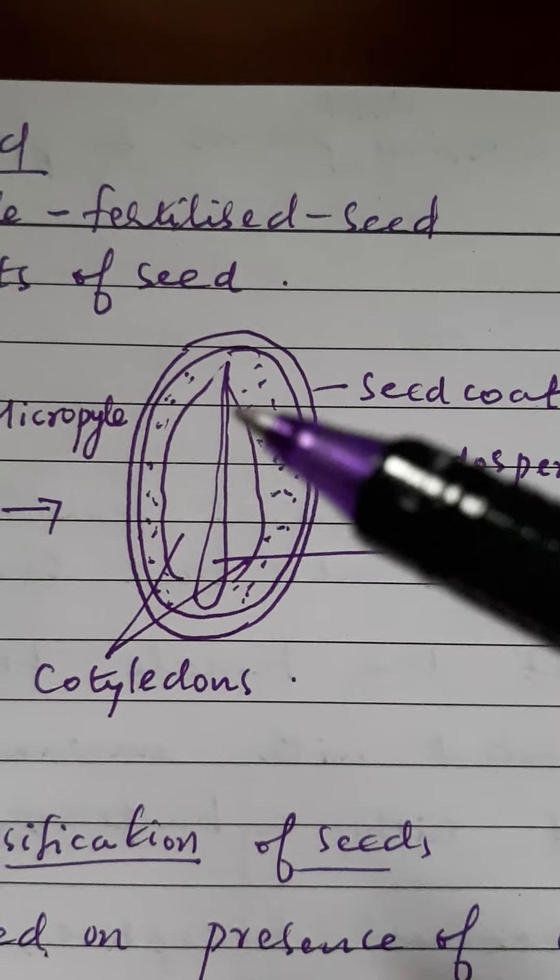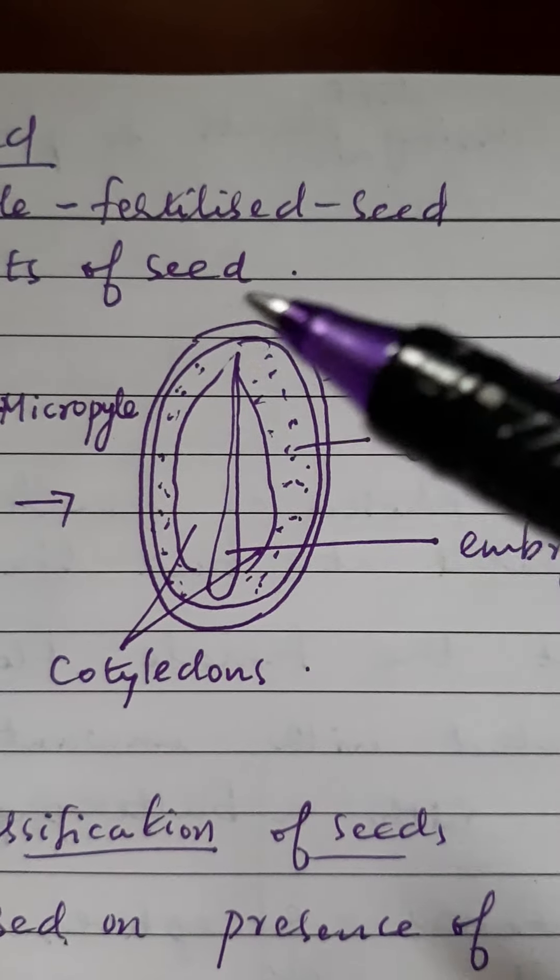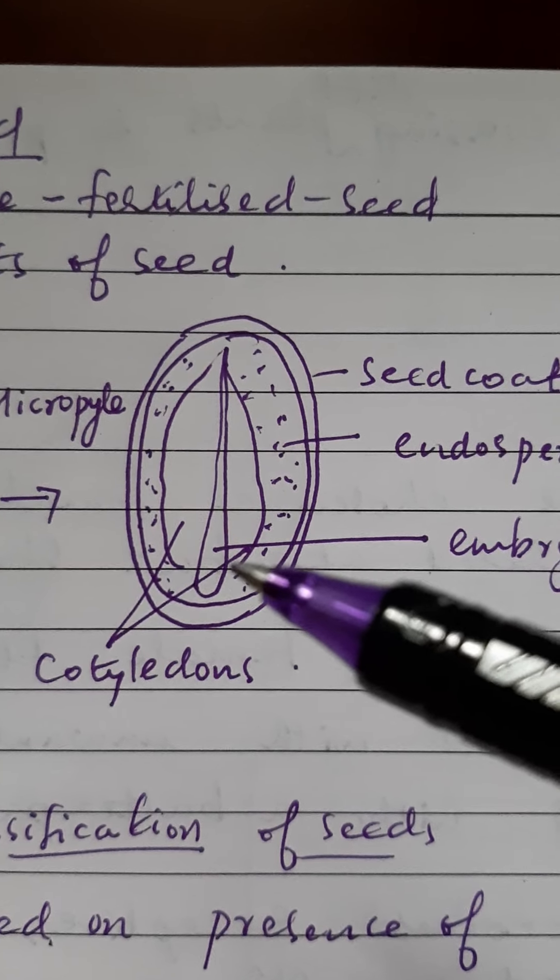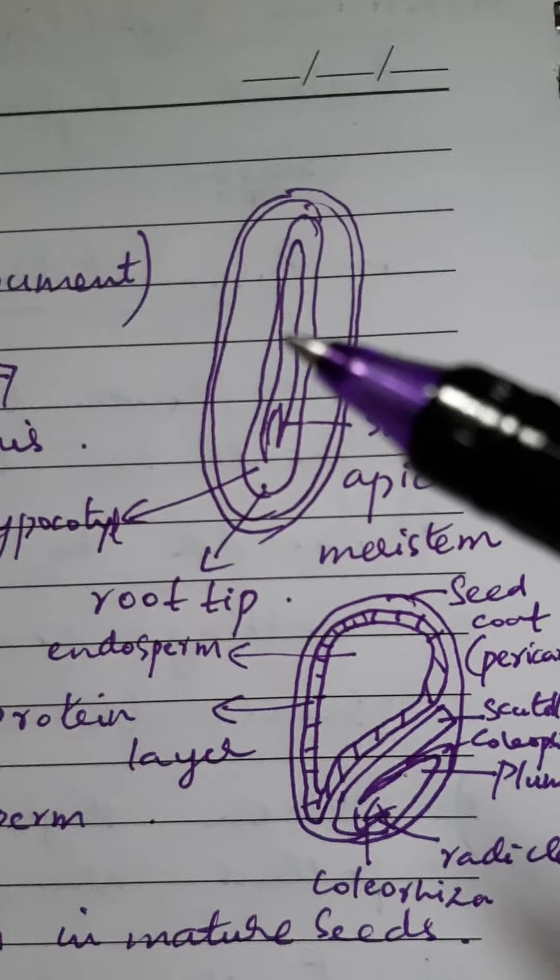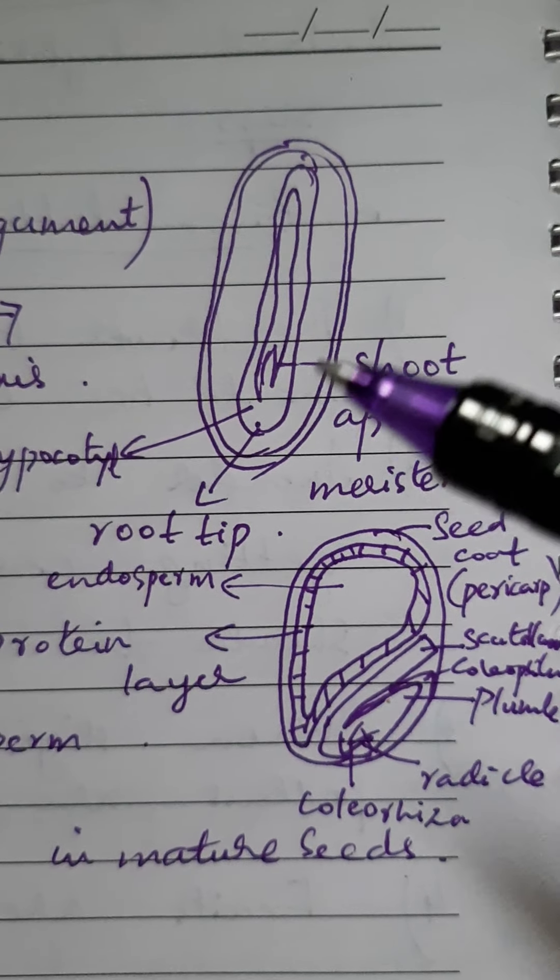Some seeds have endosperm, so they are called albuminous seeds or endospermous seeds. Some seeds have no endosperm and they are called non-albuminous seeds.